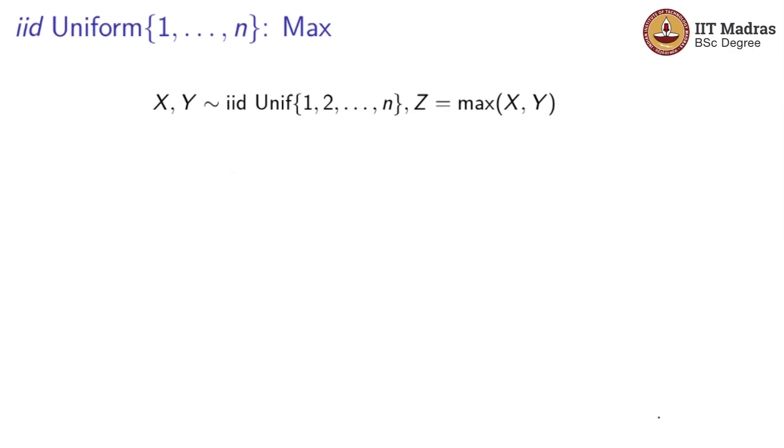Let me also do max. Max is slightly easier. Once again, I'm going to give you the answer. If you have Z equals z, in fact this is easy. Max, the range is from 1 to n. If you take a particular value z, you have z comma z, and then z comma z minus 1 all the way down to z comma 1.